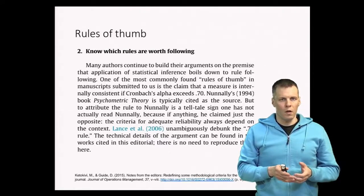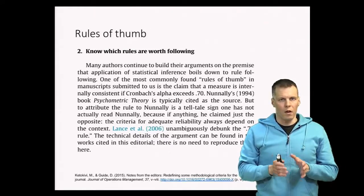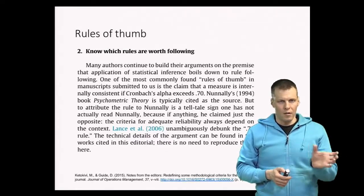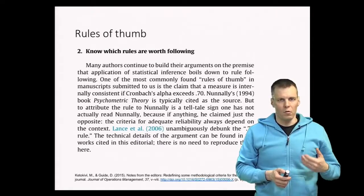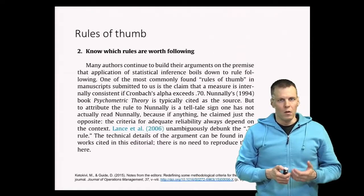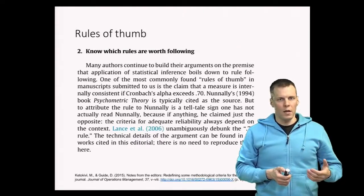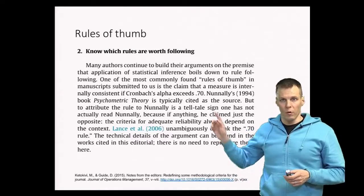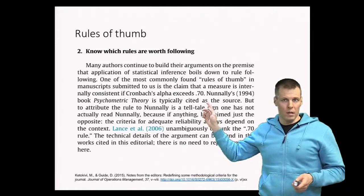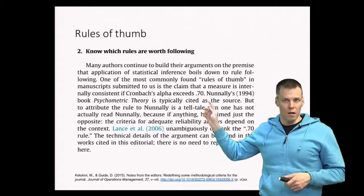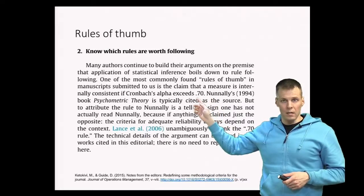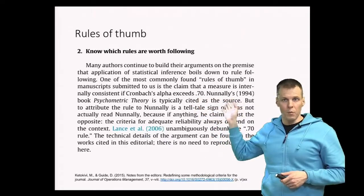This kind of yes-or-no thinking is not ideal, and particularly you cannot really justify that kind of yes-or-no based on any good methodological resource. Many authors tend to cite Nunnally's book on psychometric theory for the rule of thumb of 0.7 for Cronbach's alpha — which is our coefficient alpha, a reliability statistic — but the problem is that he doesn't make that kind of claim in his book.